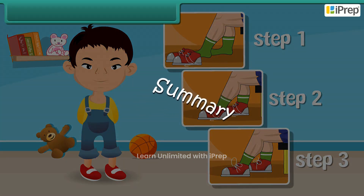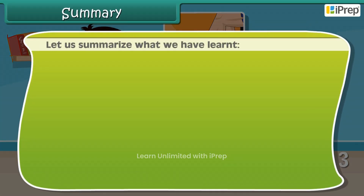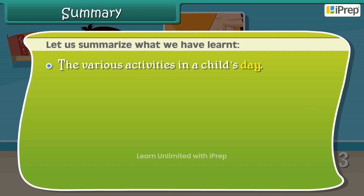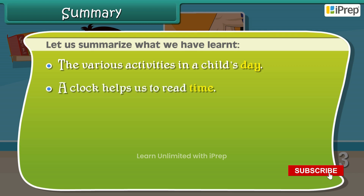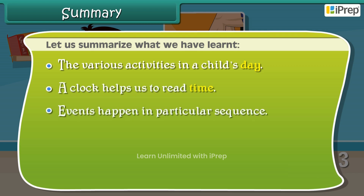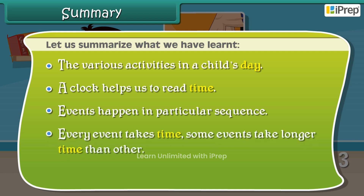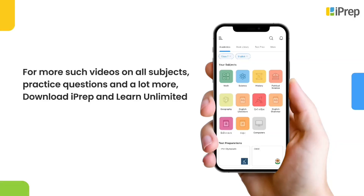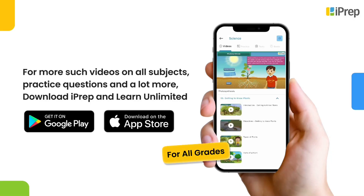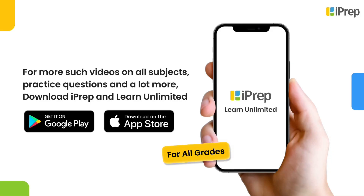Summary. Let us summarize what we have learned: the various activities in a child's day, a clock helps us to read time, events happen in a particular sequence, and every event takes time — some events take longer time than others. For more such videos on all subjects, practice questions, and more, download iPrep and learn unlimited.